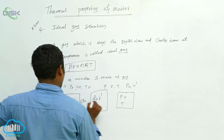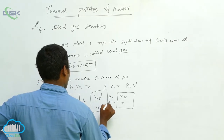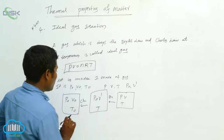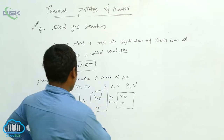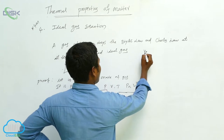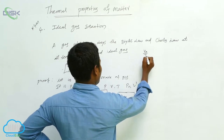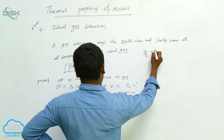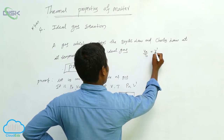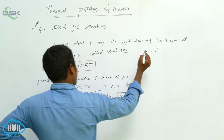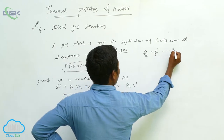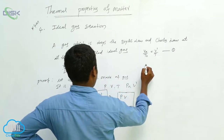Here Charles' law applies and here Boyle's law applies. From this, I am going to write V0 by T0 is equal to V1 by T. This is equation number one.